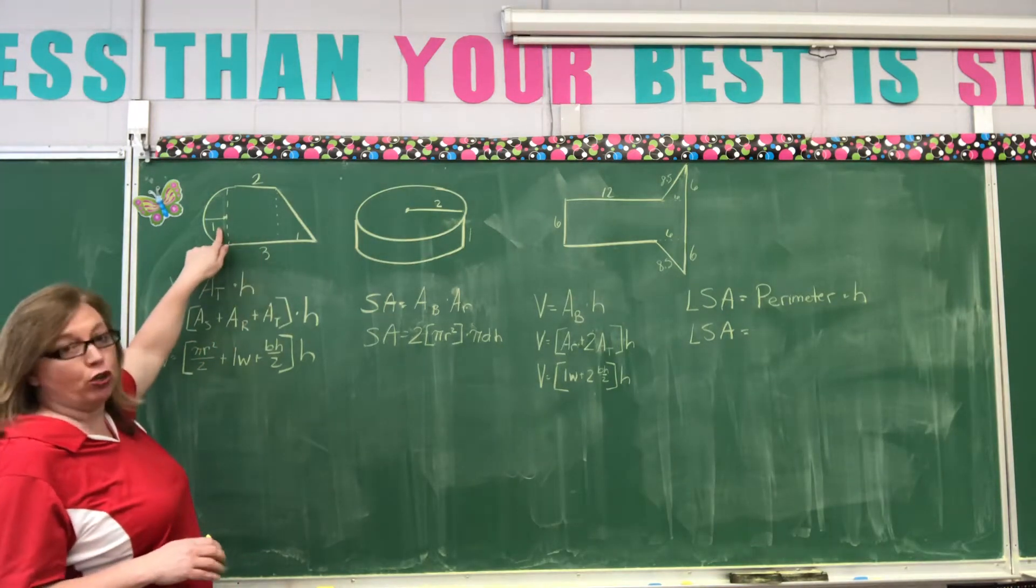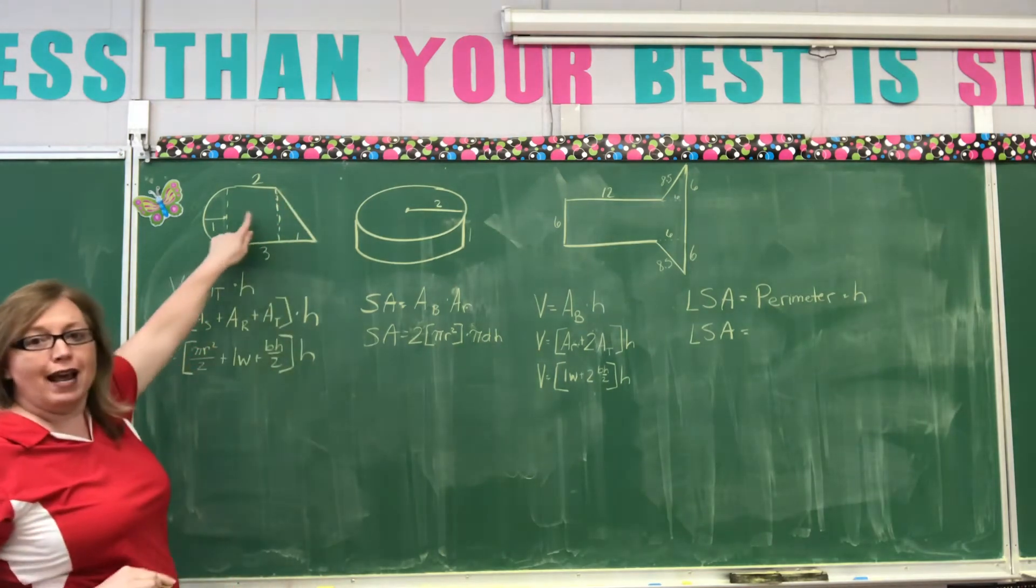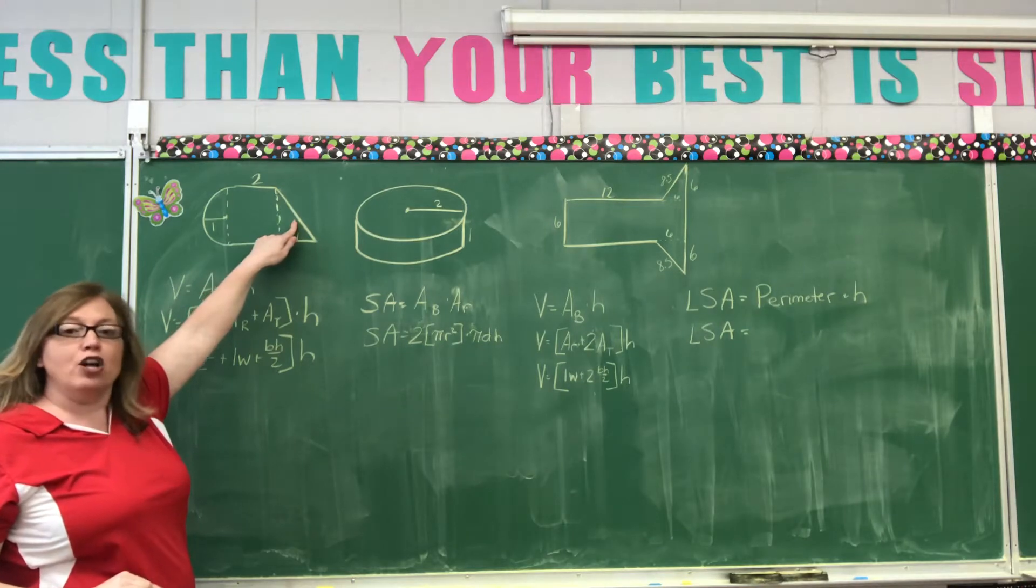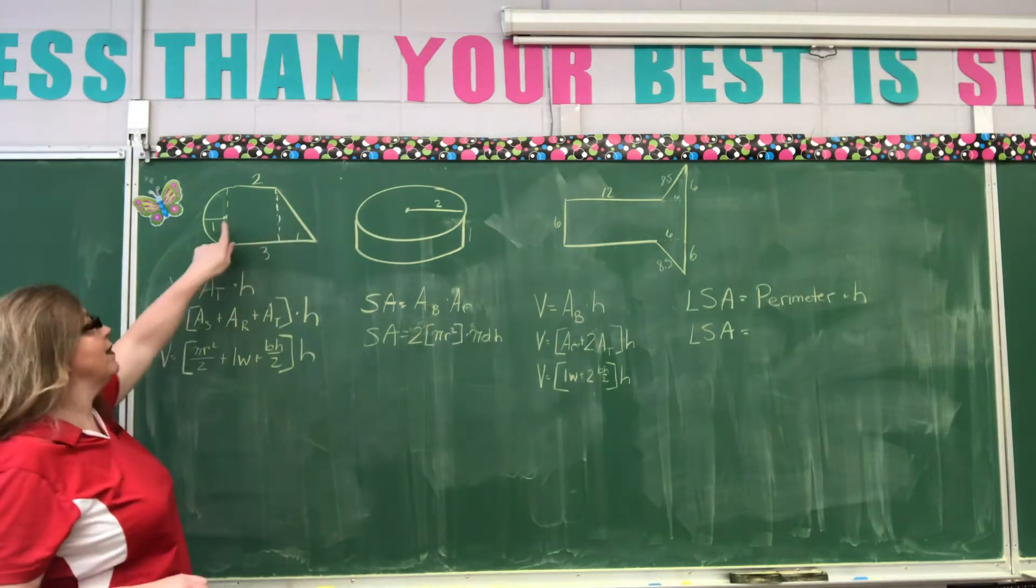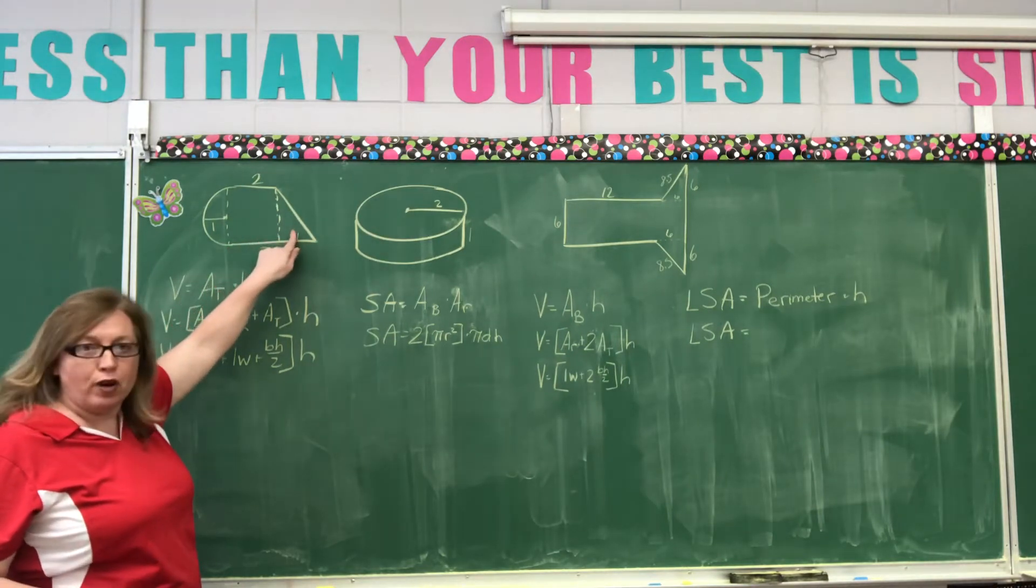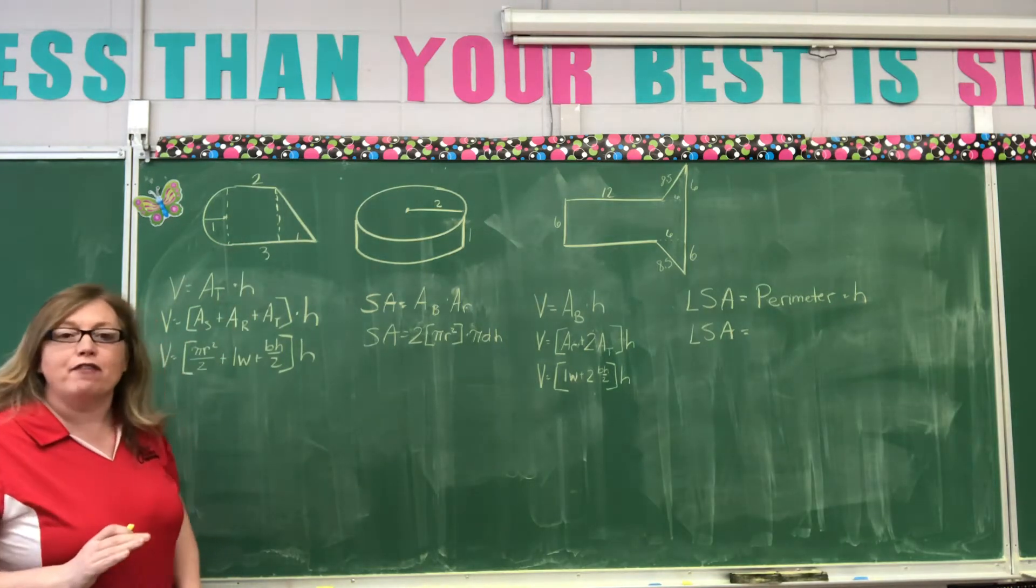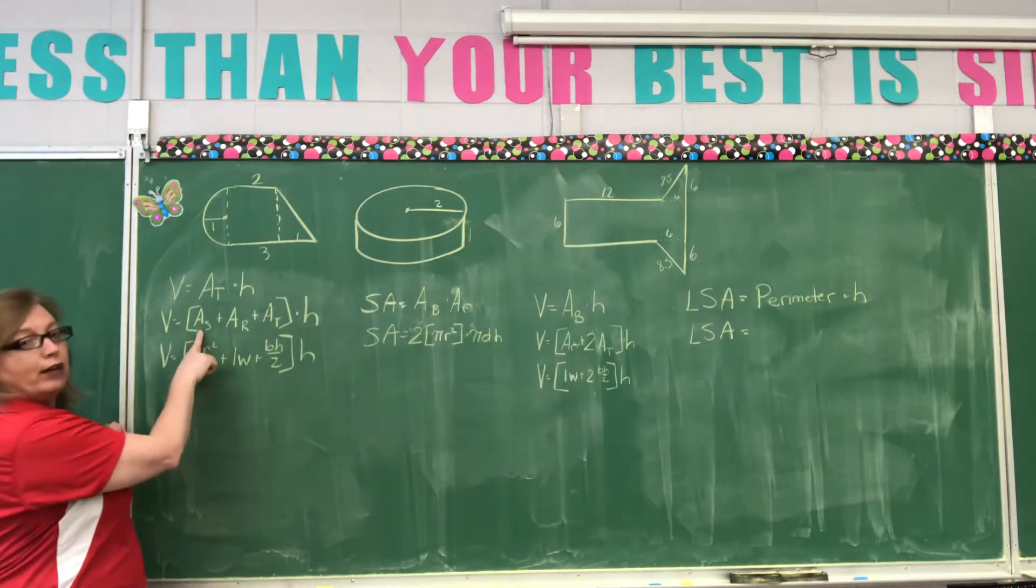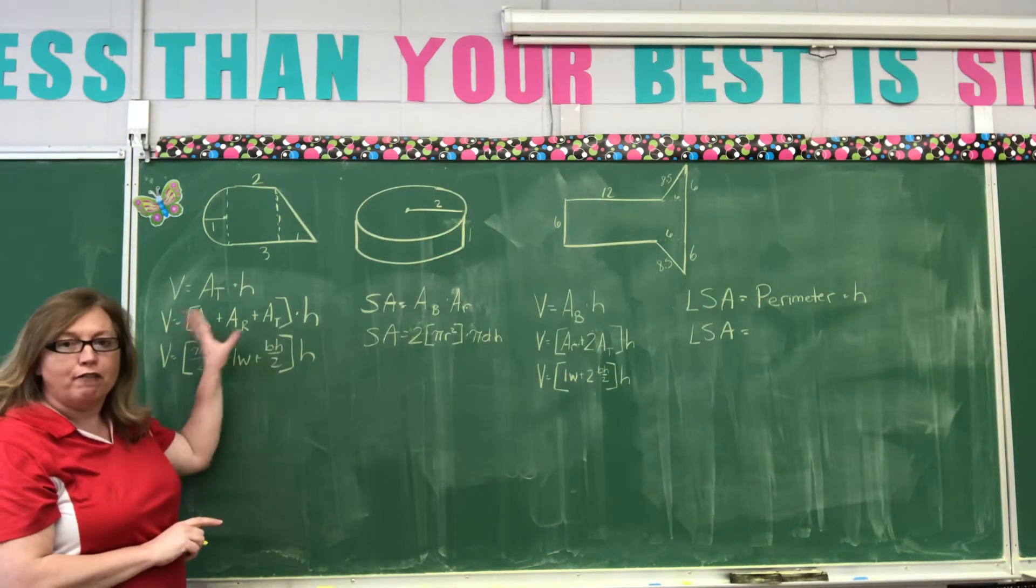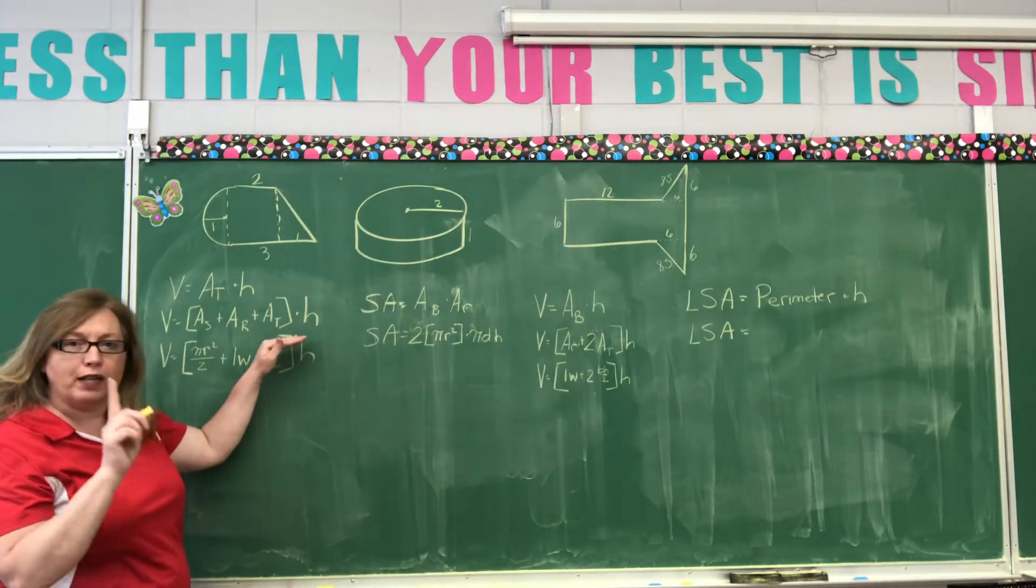You have a semicircle. If you put dotted lines right there, now you have a rectangle and a triangle. Now, I know how to and you know how to find the area of a semicircle, of a rectangle, and a triangle. So, if we could do all three of those little bitty parts, then we have our total area. So, the area of our semicircle plus the area of the rectangle plus the area of the triangle. Find those, add them together, and then multiply by the height. Now, let's break it down one more time.